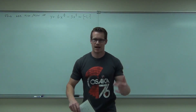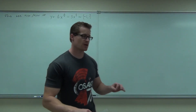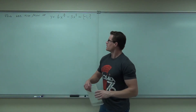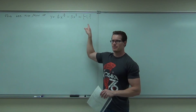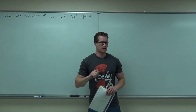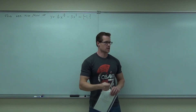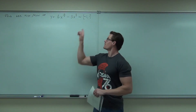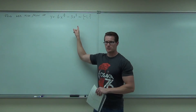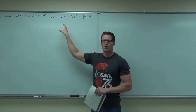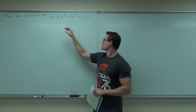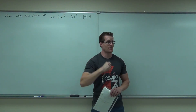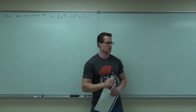Right now we're in the business of finding absolute max and absolute min. Is this going to have an absolute max and min for sure? If it's continuous on a closed interval, the absolute max and min will either be between that open interval or at an endpoint. So those closed endpoints dictate that if it's a continuous function, we will have an absolute max and min.